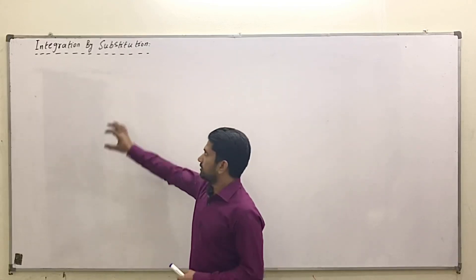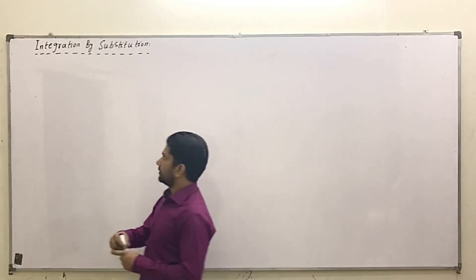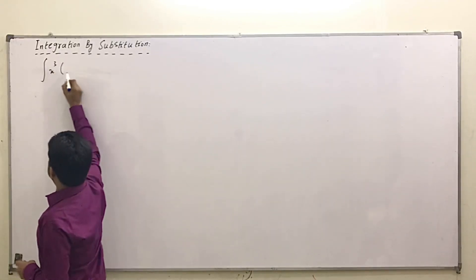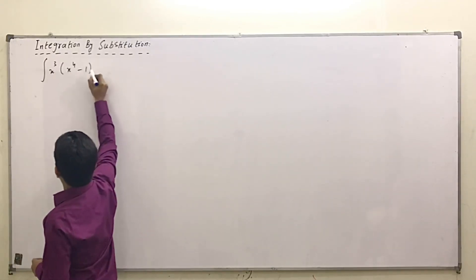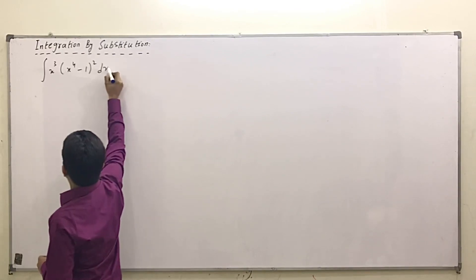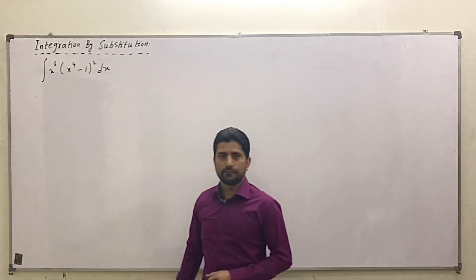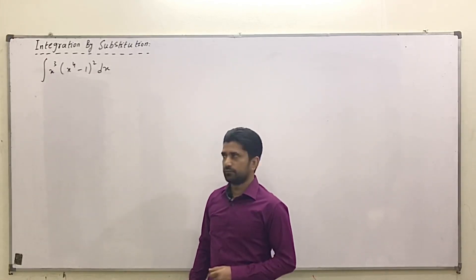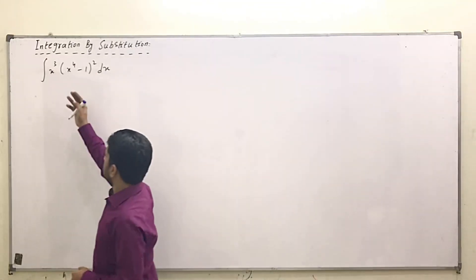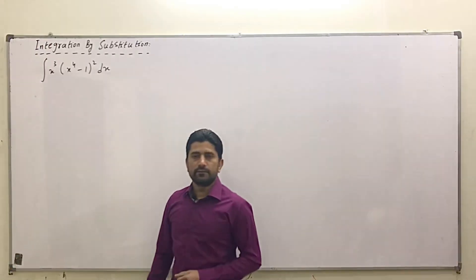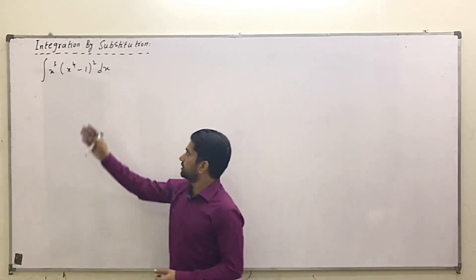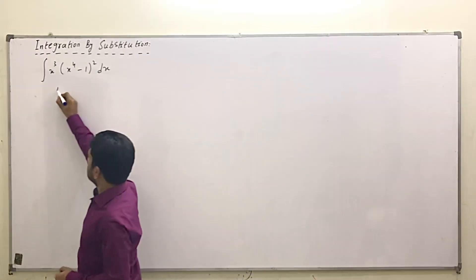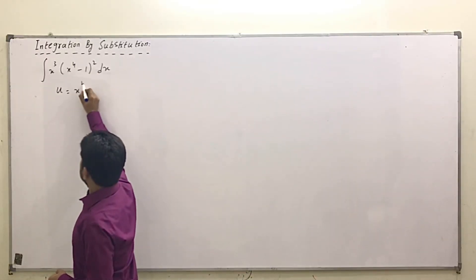Let's do a few examples. The first is: integrate x³ · (x⁴ - 1)² dx. The first step is we need to identify u. If I select u equals x³, then its derivative will be 3x², which is not present in this integral. So we suppose u equals x⁴ - 1.